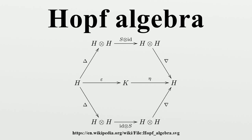A Hopf subalgebra A is said to be right-normal in a Hopf algebra H if it satisfies the condition of stability ad_R(A) for all h in H, where the right-adjoint mapping ad_R is defined by ad_R equals S, r for all r in A, h in H.